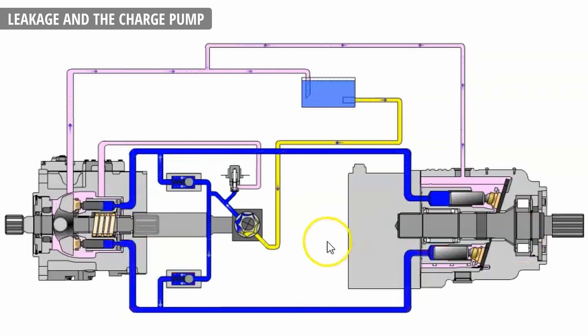In neutral, they're both open because the pressure is low in the whole system. Again, when we move joystick forward, the pressure part of the loop will have the pressure dictated by the load on the motor, and the return part will have the pressure same as the relief settings on the charge relief valve.